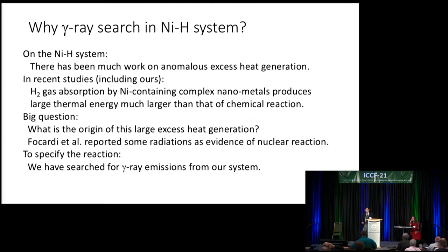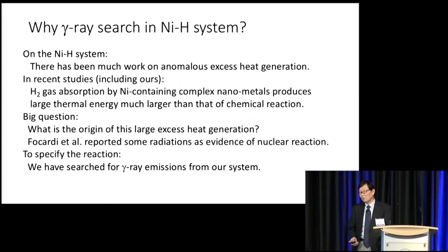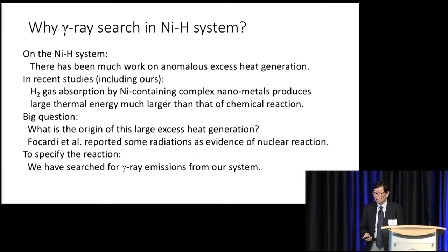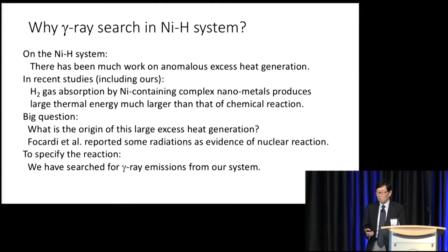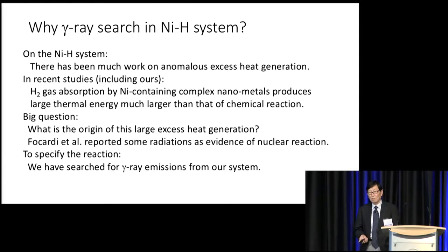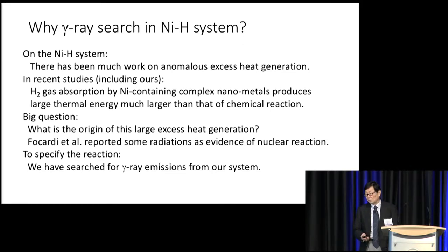Why do we have to search for the gamma rays in the nickel plus hydrogen system? Of course, we know on the nickel-hydrogen system there has been much work on anomalous excess heat generation. Particularly in recent studies, we studied also hydrogen gas absorption by nickel-containing complex nanometals producing large thermal energy, much larger than that of chemical reaction. There is a big question: what is the origin of this large excess heat generation? Foucault et al. reported some radiations as evidence of nuclear reactions. We will try to specify the reaction if we can see the gamma rays. That's why we have searched for gamma ray emission from our system.